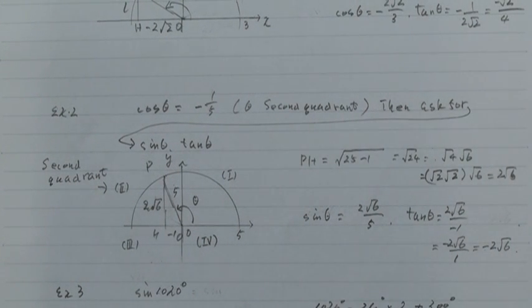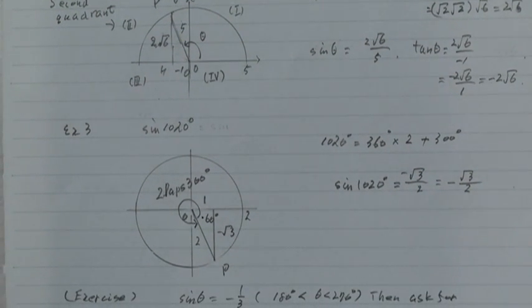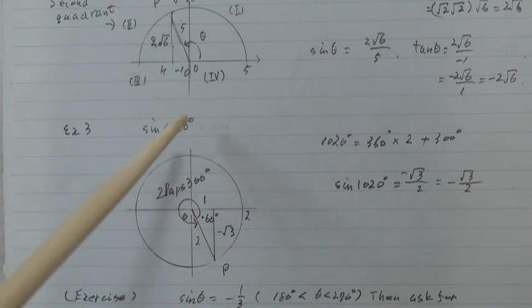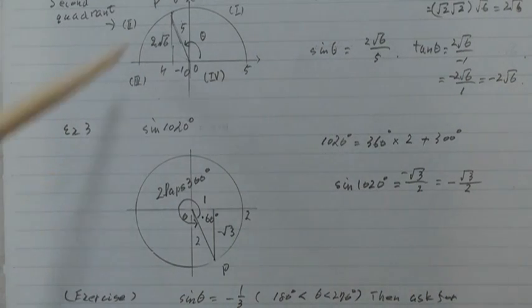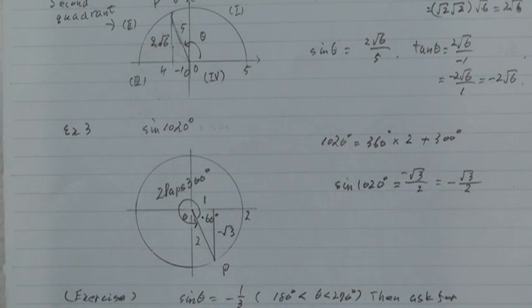And next example 3. Sin 1020 degrees. You find equals 360 times 2 plus 300 degrees. This is.